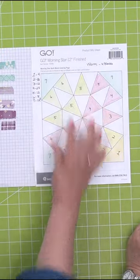So I looked at this, and I only had one of shape one. So with four blocks, that meant I needed to cut four.